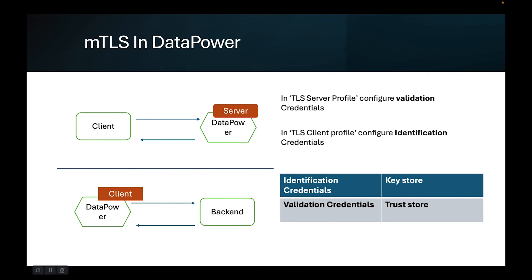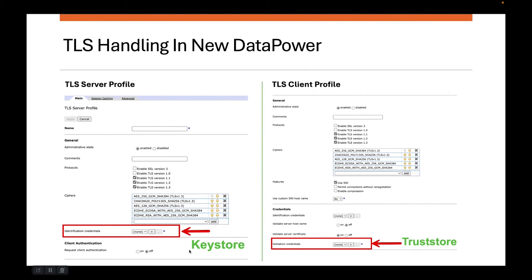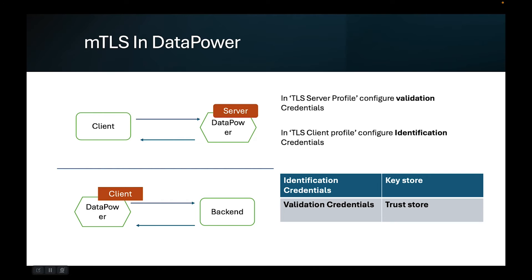At the bottom scenario, you have DataPower connecting with a backend. Here, if mutual TLS happens, you configure the identification credential in the TLS client profile. I mentioned earlier that you should ignore the identification credential in most cases — that's true. But if you are dealing with mutual TLS, you also need to configure the identification credential. These credentials ensure that when the backend server demands a certificate from DataPower, the certificate associated in the identification credentials is sent as part of the TLS handshake. That is how you configure mutual TLS in DataPower.